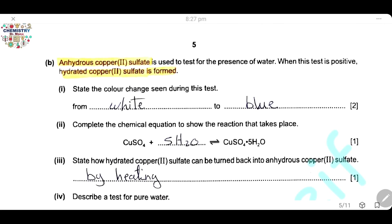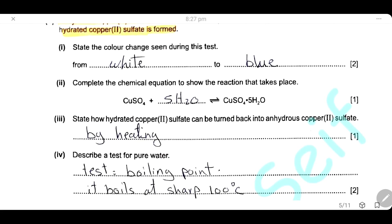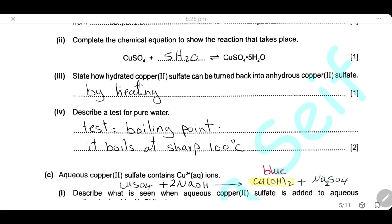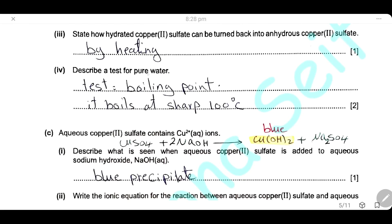Anhydrous copper sulfate is used to test for the presence of water. When this test is positive, hydrated copper sulfate is formed. The color changes from white (anhydrous) to blue (hydrated copper sulfate). Copper sulfate takes five molecules of water to change into hydrated copper sulfate. To turn hydrated copper sulfate back into anhydrous copper sulfate, we heat it to remove the water. To test for pure water, check the boiling point — pure water boils at exactly 100°C — or the freezing point, which is 0°C.